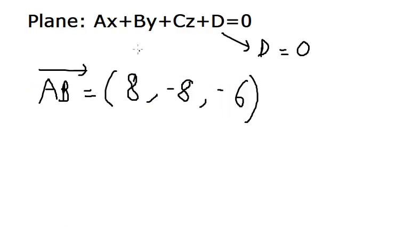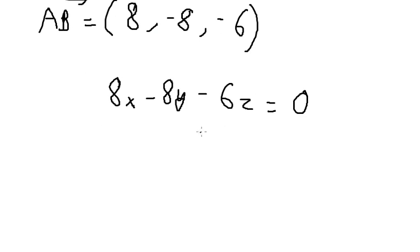So we put A, B and C. That should be 8x minus 8y minus 6z equals to 0. We simplify we divide both sides with 2. We got about 4x minus 4y minus 3z equals to 0.